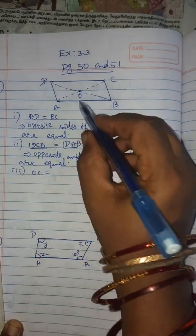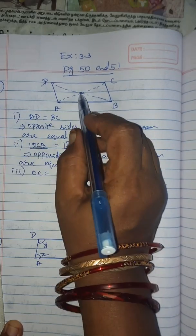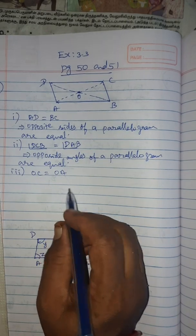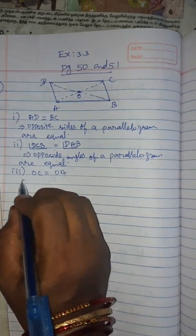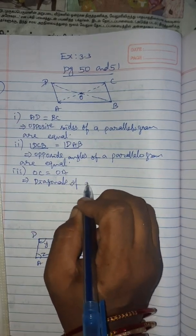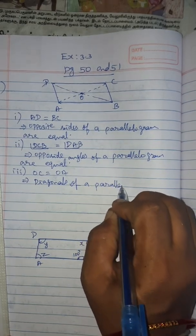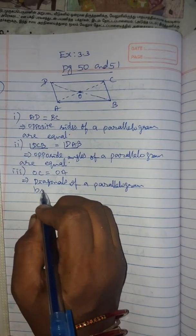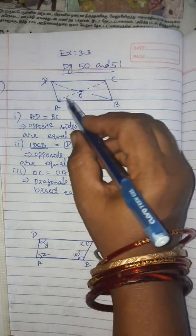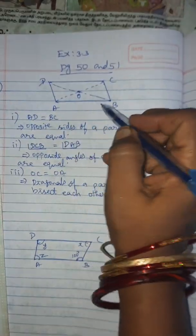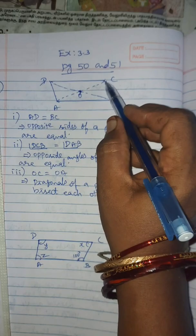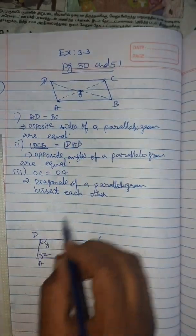Third, OC equal to what. O is the intersection point of the diagonals. OC will be equal to OA. The reason: diagonals of a parallelogram bisect each other.